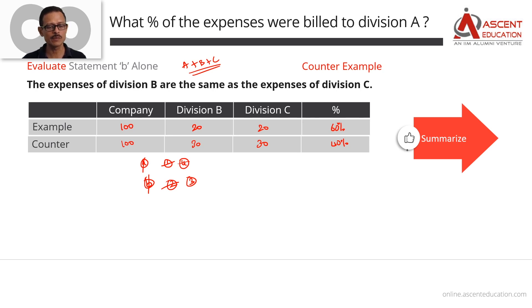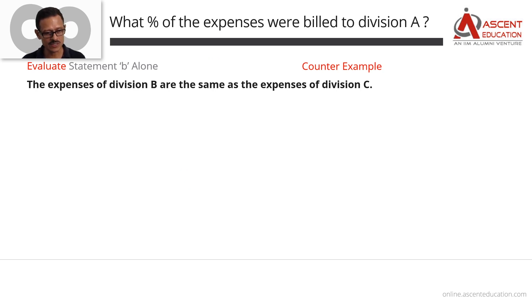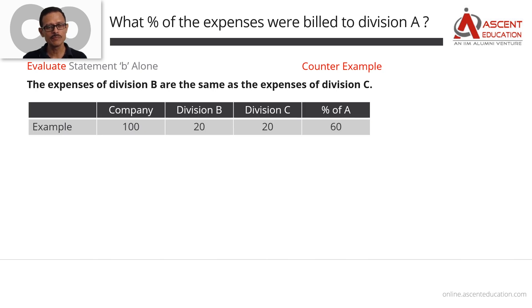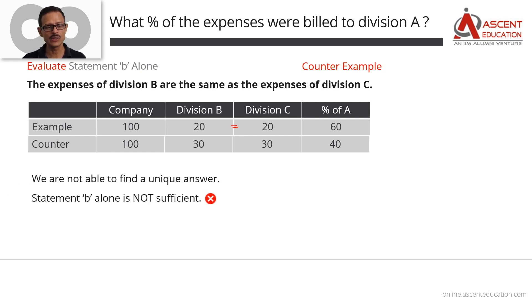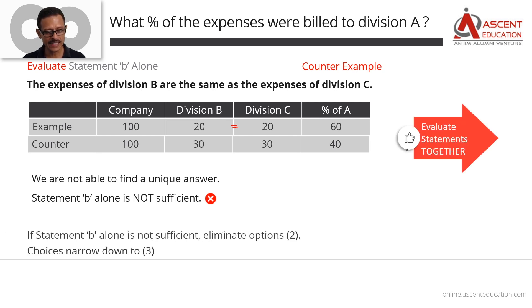Summarizing in printed form: with B and C expenses equal and a company total of 100, if B and C are each 20, A's expense is 60. Conversely if B and C are each 30, A's expense is 40. We have not been able to find a unique value, so Statement B alone is not sufficient. Eliminate answer option 2. We are down to just choice 3.